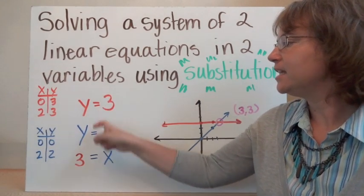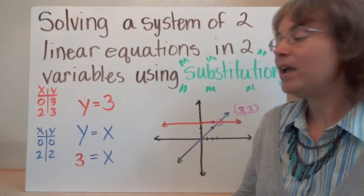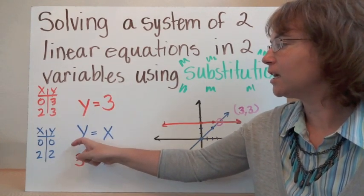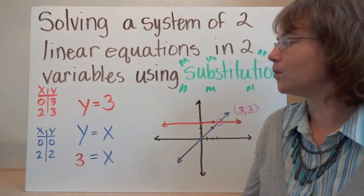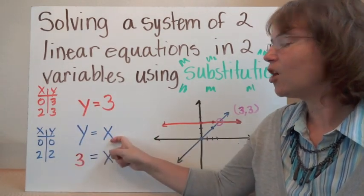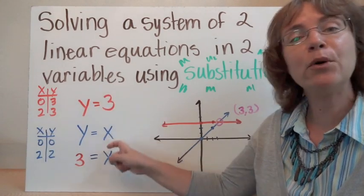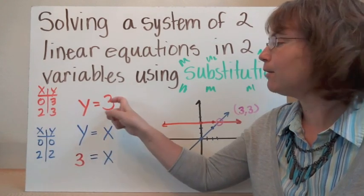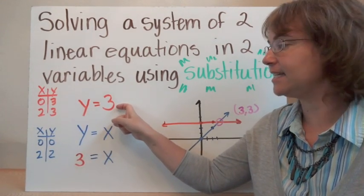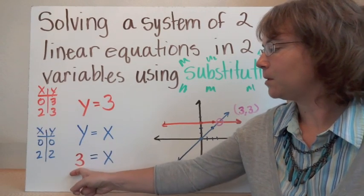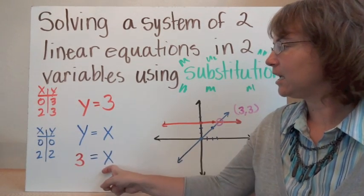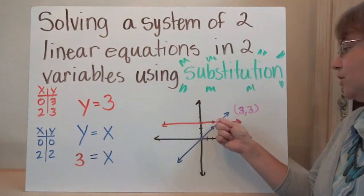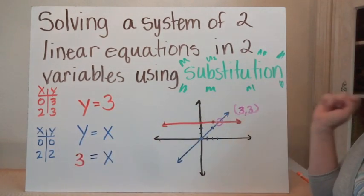Now we want to find out when these two things are equal. We can substitute the value from the first equation into the second equation because we want the y's to be equal. So y equals 3 right here, and y also has to equal x — both these things have to be true. So if we want to solve for x, we take this y and replace it with what y equals. So instead of y, I'm going to put a 3. That gives us 3 equals x, and since y is always equal to x, y is also equal to 3. So the solution is (3, 3).